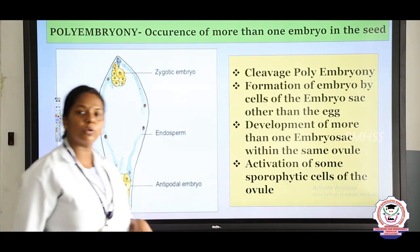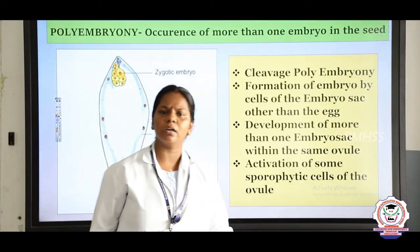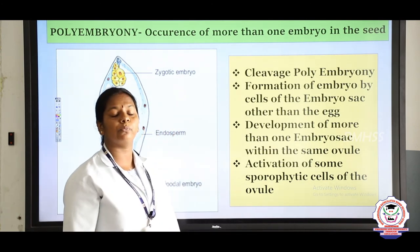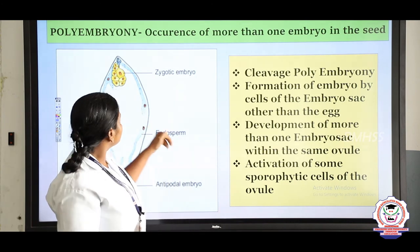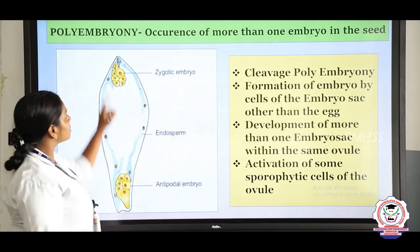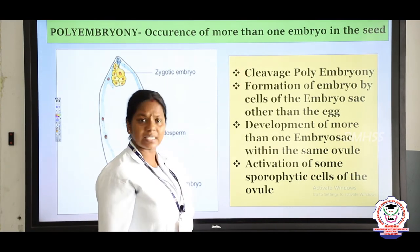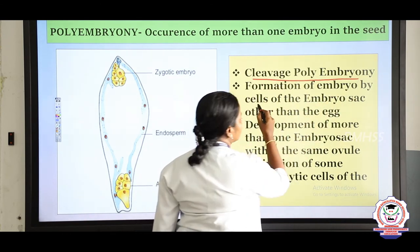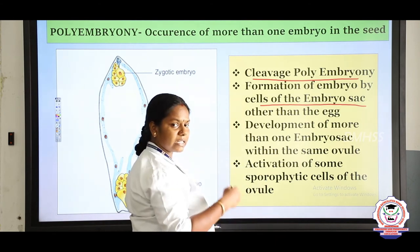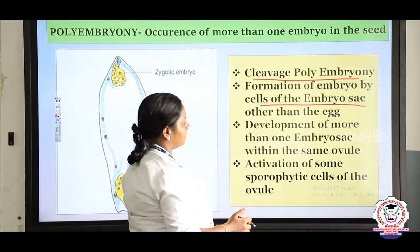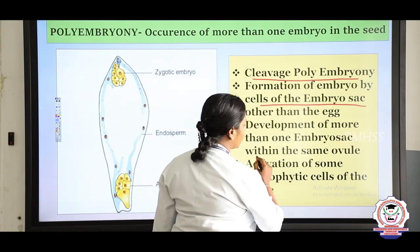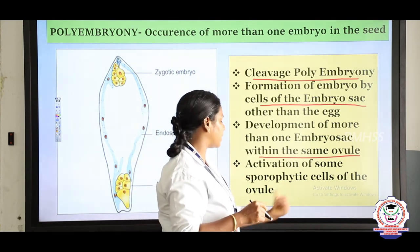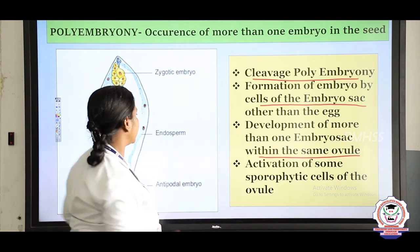Now we study polyembryony. Poly means many — if more than one embryo is formed it is called polyembryony. It was first found by Anton van Leeuwenhoek. It is defined as the occurrence of more than one embryo in a seed. Based on origin we classify polyembryony into: cleavage polyembryony; formation of embryo by cells of the embryo sac other than the egg (synergids or antipodals); development of more than one embryo sac within the same ovule; and activation of sporophytic cells of the ovule.